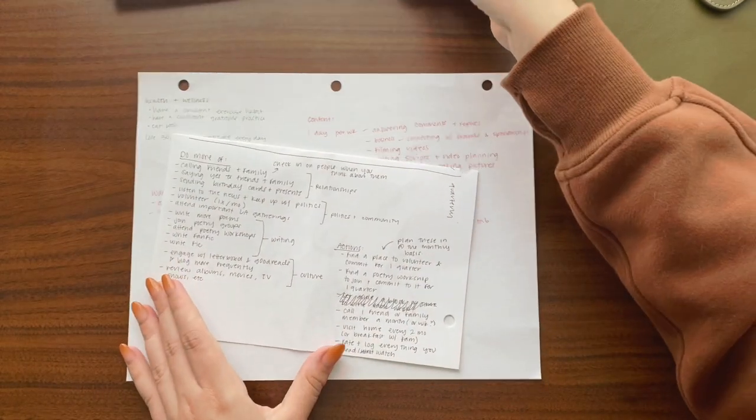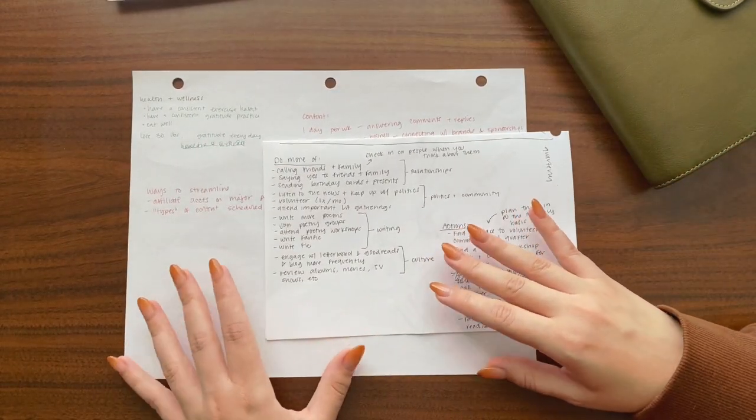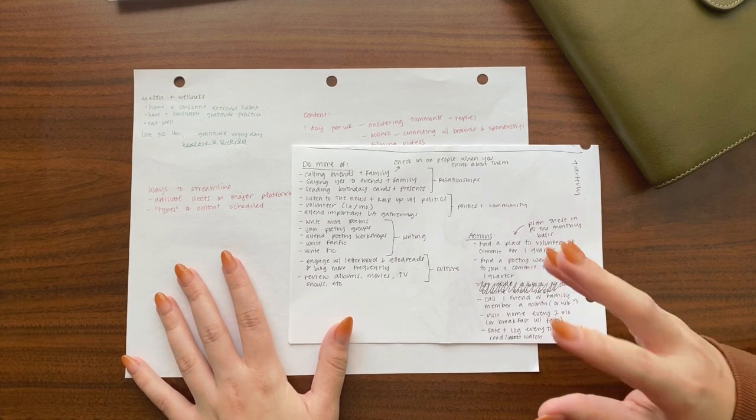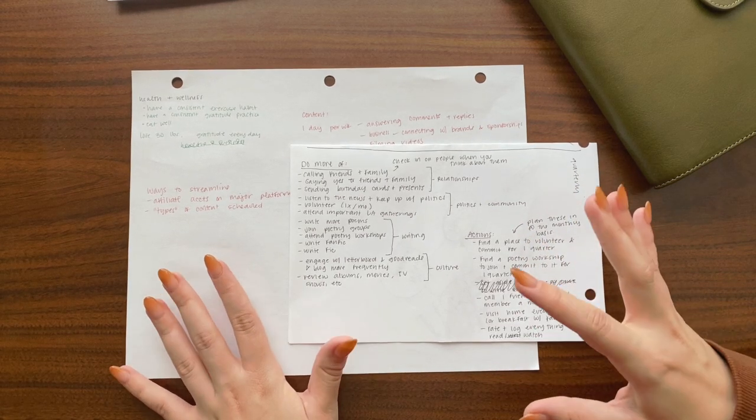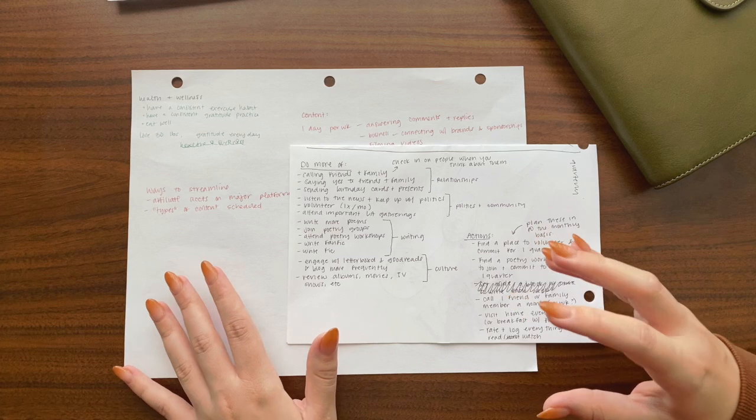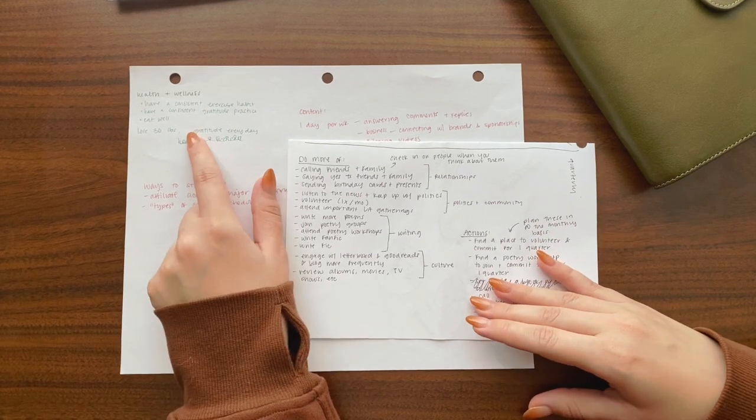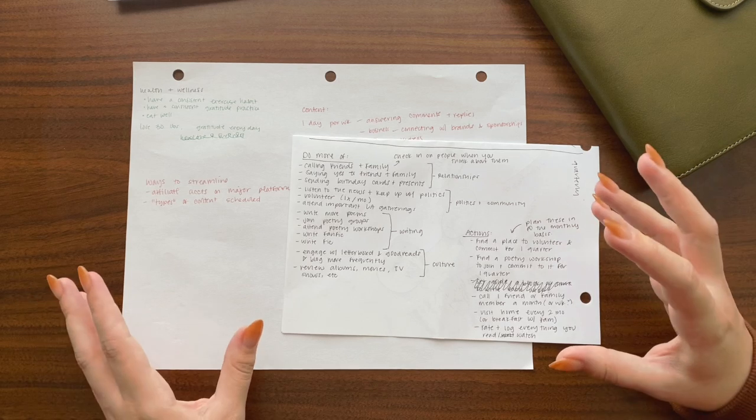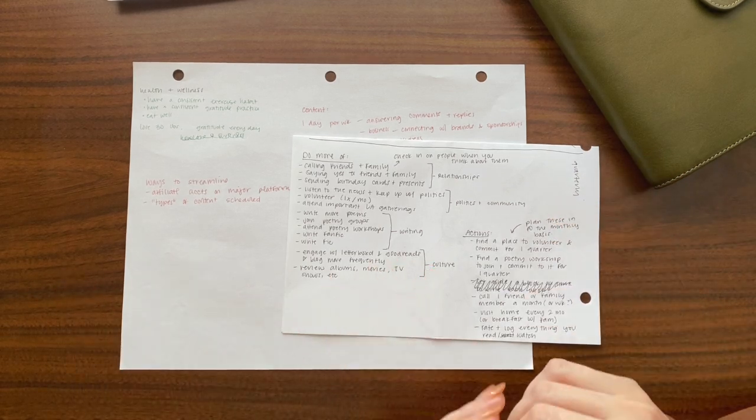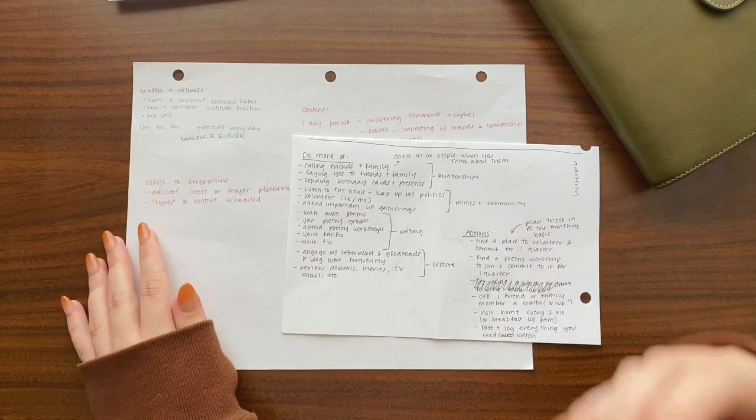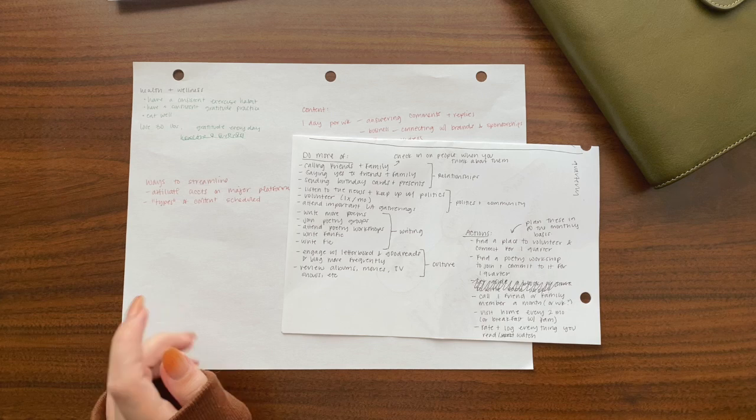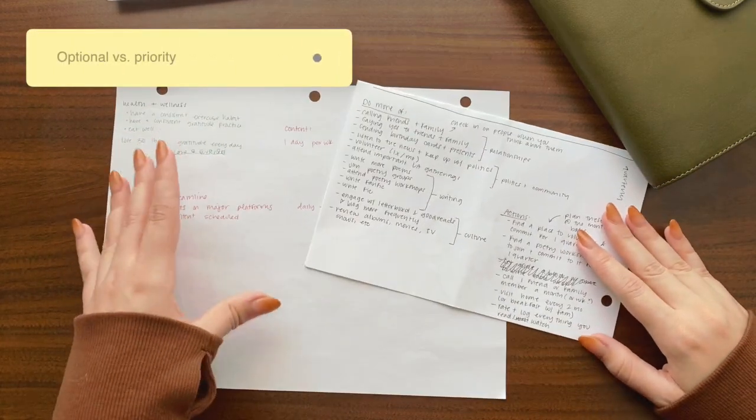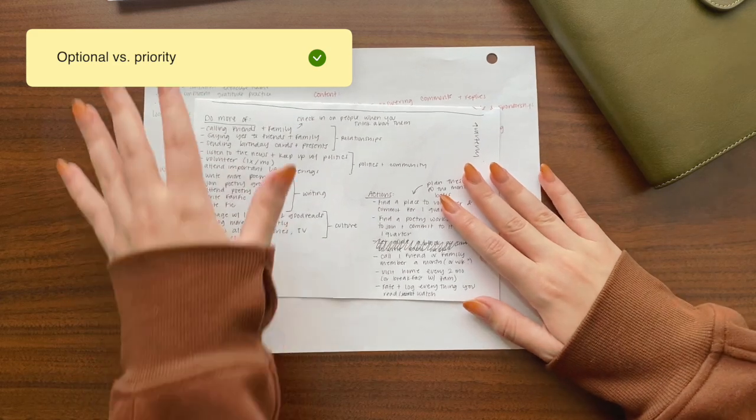So after that, it began to emerge that I had a few priorities that I knew I needed to or wanted to accomplish that were slightly different from the way I had set it up previously, but were things like health and wellness, content, my spiritual life. These were areas that emerged in that second round of goal setting that seemed to be things I really needed to focus on for 2023.